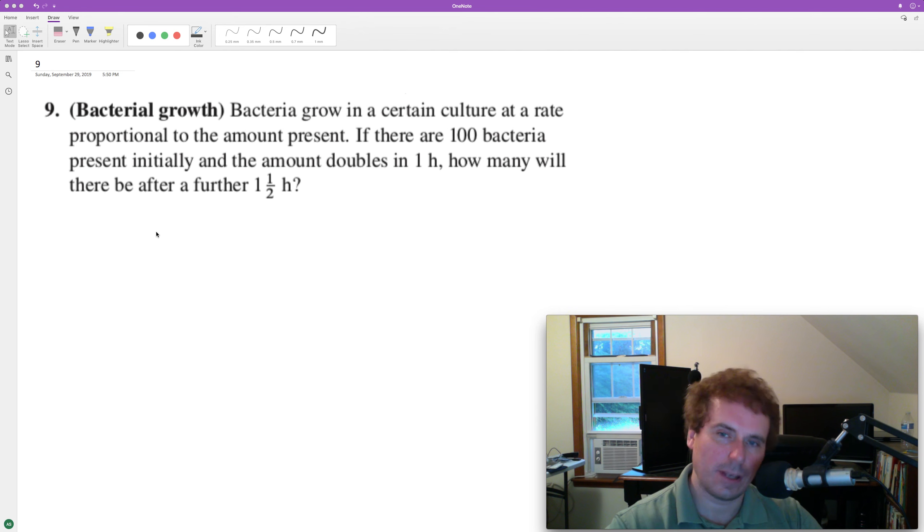Bacteria are growing in a culture at a rate proportional to the amount present. There are 100 bacteria initially and the amount doubles every one hour, and we want to calculate how much grows after an hour and a half.